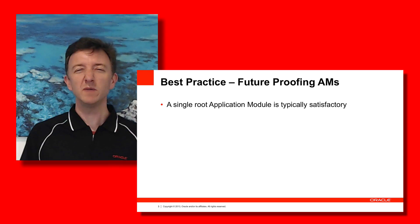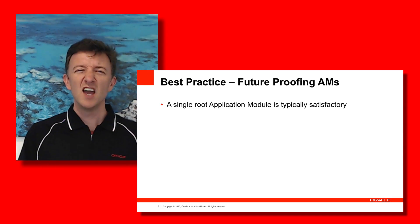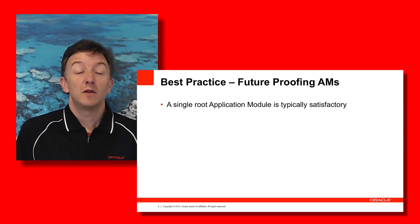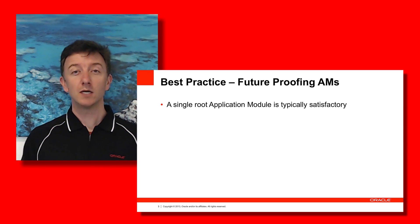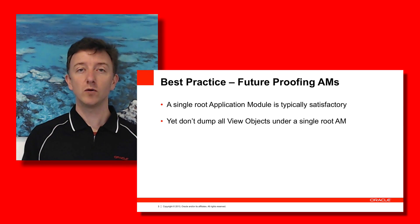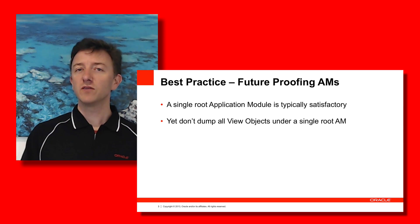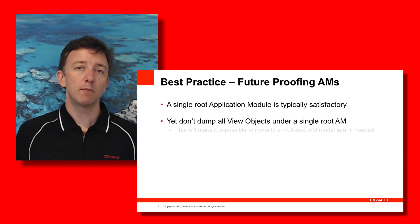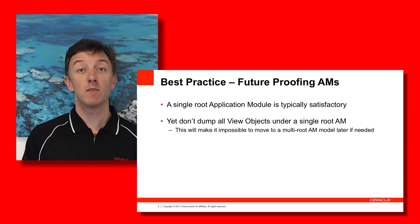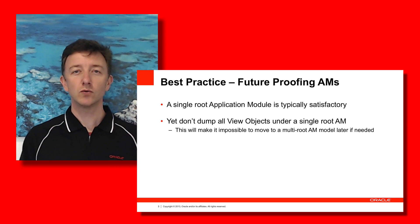So let's get right into it. From the previous episodes of the ADF Architecture TV series on application module design, we talked about how for most applications it would be satisfactory to have a single root application module. But there are a couple of problems with that approach. Developers might start lumping numerous tens if not hundreds of view objects under one root application module. In addition, at some point in the future — maybe not in the initial build but in a maintenance phase — there might be a reason to move to multiple root application modules.